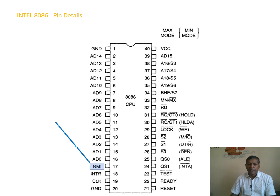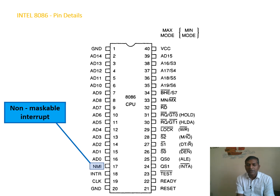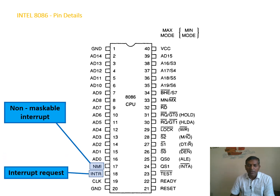NMI is a non-maskable interrupt line. Whenever a non-maskable interrupt occurs on the 8086, the 8086 has to provide the service — whatever the input, it has to be delivered as a non-maskable interrupt.